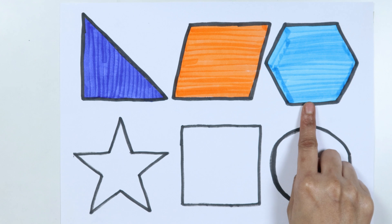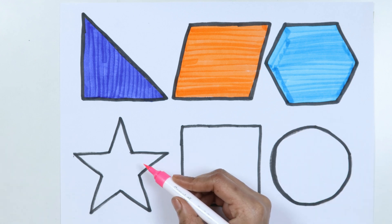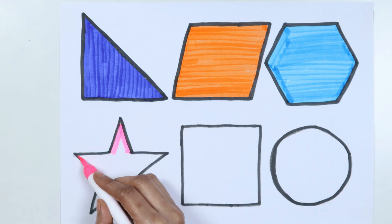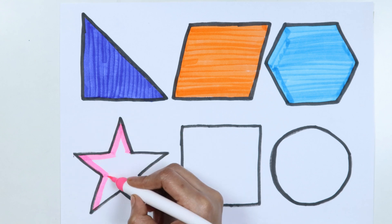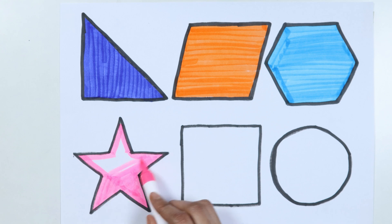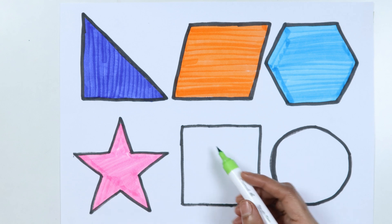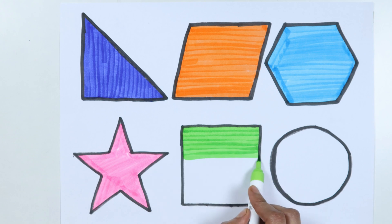Hexagon, pink colour. Star, light green colour. Square, yellow colour.